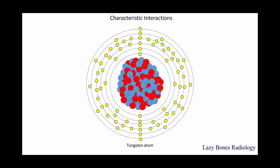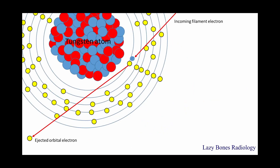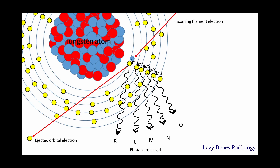Now let's look at how characteristic interactions work. The incoming filament electron strikes an inner shell electron of the tungsten atom, causing the electron to be ejected — known as an ejected orbital electron — and the filament electron continues on its path. This collision causes a vacant spot inside the inner shell of the tungsten atom, which causes a change in charge. In order to maintain balance, neighboring electrons shift towards the center, releasing energy known as a photon. As one electron travels towards the center, the vacant spot moves from the center to the outer shell because the electrons keep shifting inward. Every time there's a shift, a photon is released. This is known as a characteristic cascade.